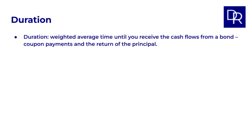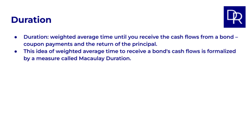When you hear the word duration, you might naturally think of time. In the context of bonds, one way to understand duration is as the weighted average time until you receive the cash flows from the bond — coupon payments and the return of your principal at maturity. This intuitive idea of weighted average time to receive a bond's cash flows is formalized by a measure called Macaulay duration.